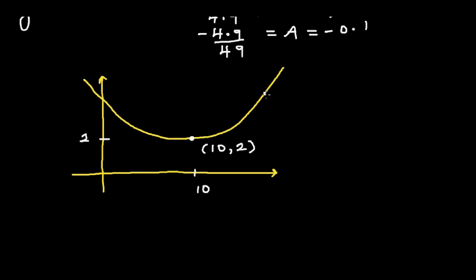And say this is 12 comma 2 and say this is 12 comma 5. So the question is we want to find the equation of this graph and we want to find what's the y-intercept.